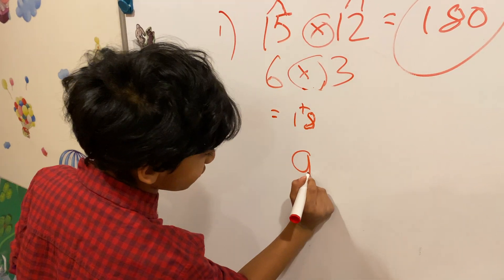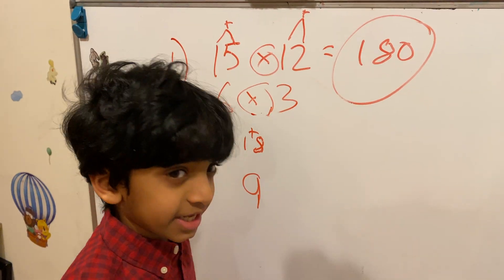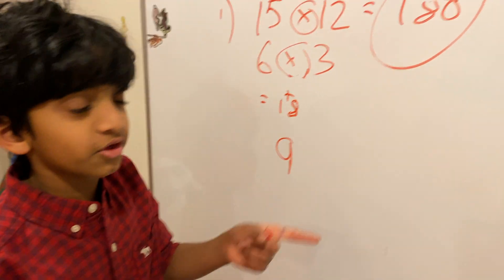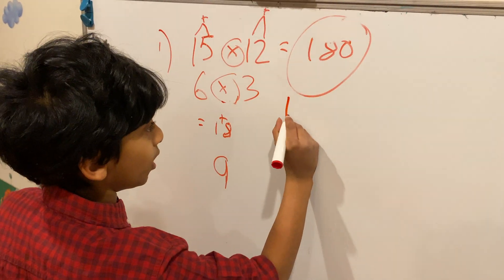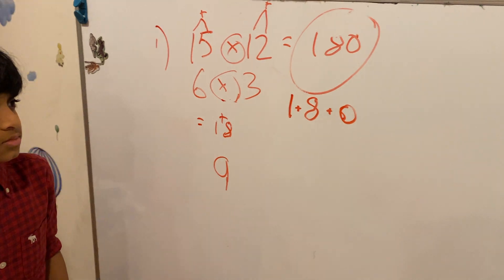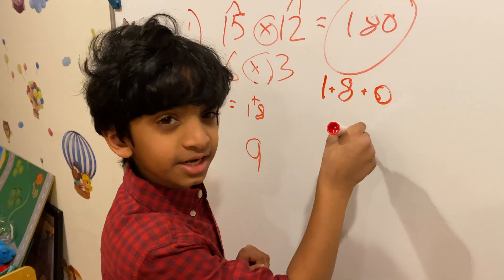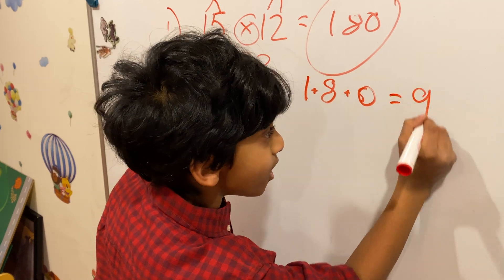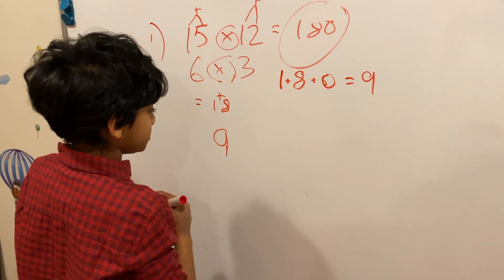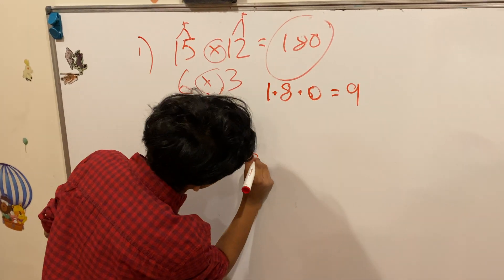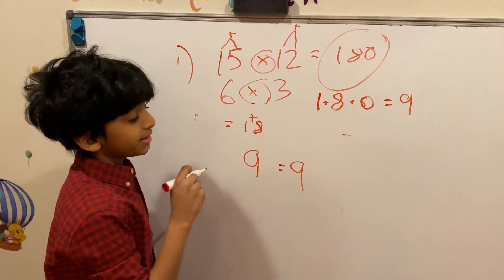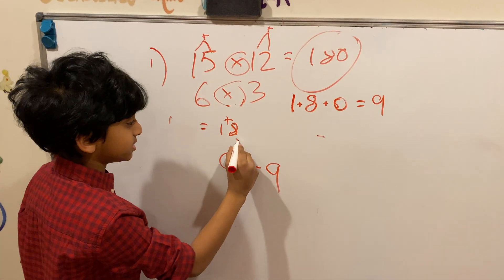1 plus 8 equals 9, so let's keep 9 here. Now let's come to the right hand side — we have 180. The same way, let's get to a single digit number: 1 plus 8 plus 0. So 1 plus 8 is 9, plus 0 is 9. We verify that the left hand side is 9 and the right hand side is 9, so 9 equals 9. If they're equal, the answer is correct.